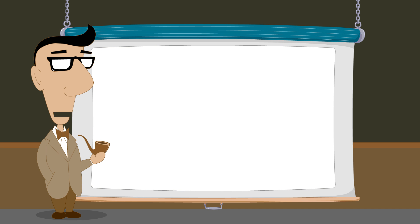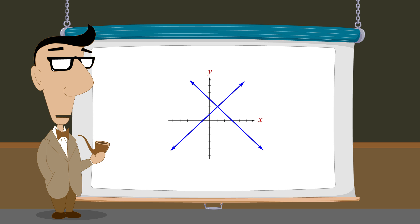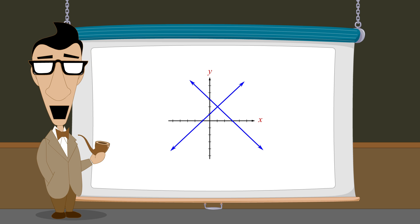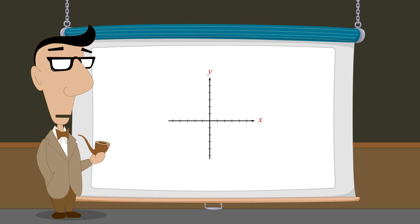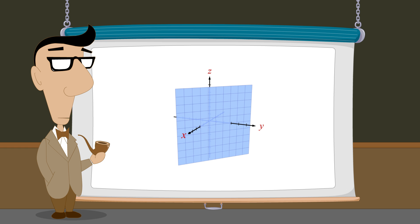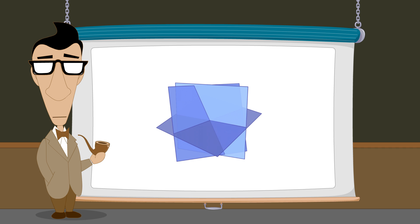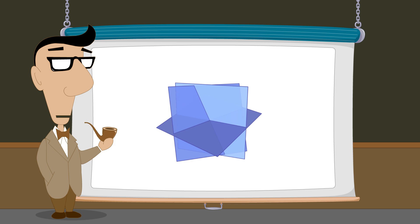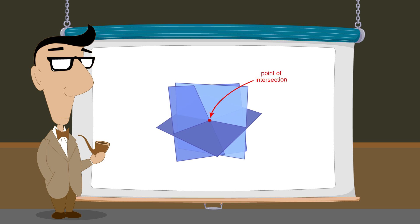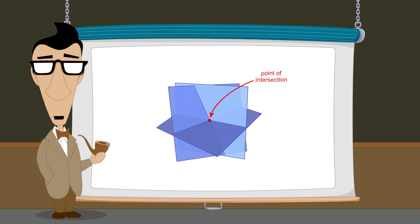We have seen that systems of two linear equations in two variables can be represented graphically as lines in the Cartesian plane, and the solutions of these systems correspond to the points where the lines intersect. In systems of three linear equations in three variables, the equations are represented as planes in Cartesian space. Each plane may be oriented at any angle and positioned anywhere in space relative to the other planes. Since each plane graphically represents the set of solutions to one of the three equations, the points where all three planes simultaneously intersect correspond to the solutions which simultaneously satisfy all three equations. These points, therefore, correspond to the solutions of the system.